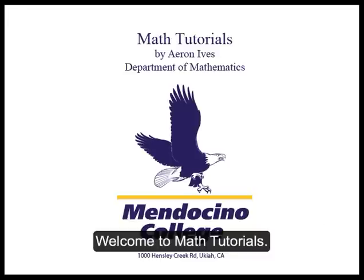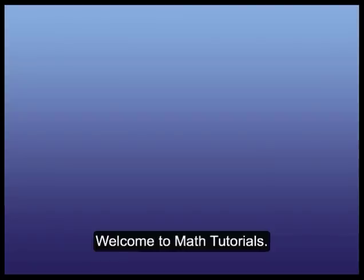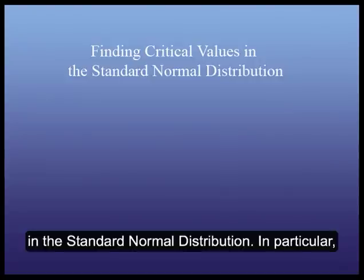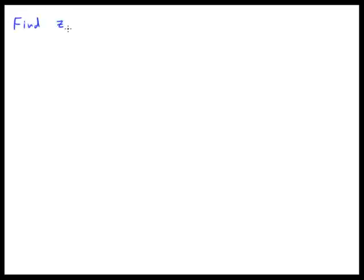Welcome to Math Tutorials. In today's video, we're going to take a look at finding critical values in the standard normal distribution, and in particular, we're going to look at finding what's called z₀.₀₅.